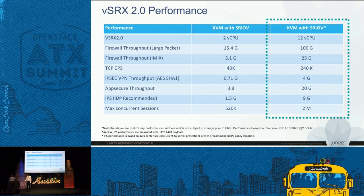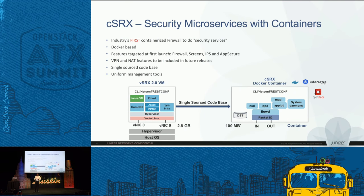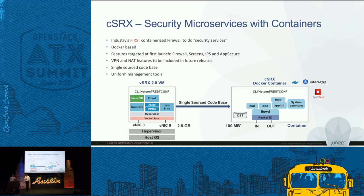The other announcement we made is the CSRX. We've taken all the features supported on the VSRX and moved them into a container — this is what we're calling the container-based SRX. It's a firewall built in a container, and it's the industry's first container-based firewall. It has complete security feature parity with the VSRX — it doesn't have routing features, but all security features are there. The code base is singly sourced from the VSRX code base, so any fixes that go into the physical SRX get applied to the virtual SRX as well as the container-based SRX.